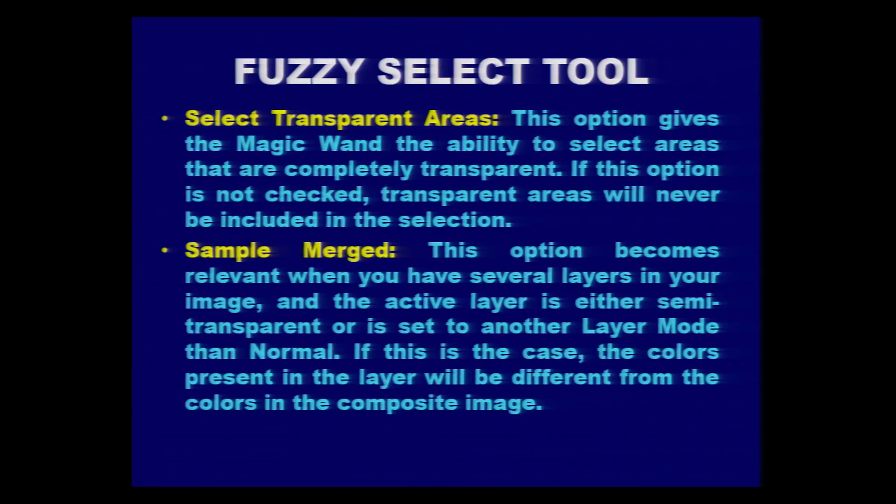There are more options usable with the fuzzy select tool. One of them is 'Select Transparent Areas,' which gives the tool the ability to select areas that are completely transparent. If this option is not checked, transparent areas will never be included in the selection. This is very useful when we are having multiple layers or a merged single layer, so we need to intelligently decide whether to include transparent pixels.